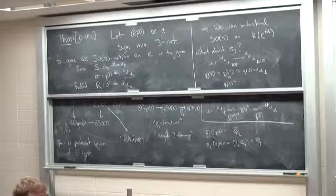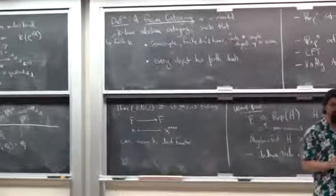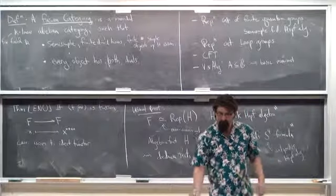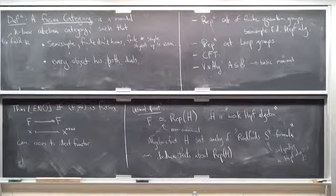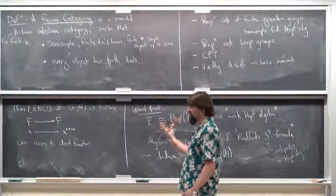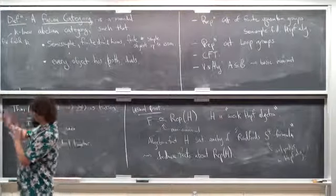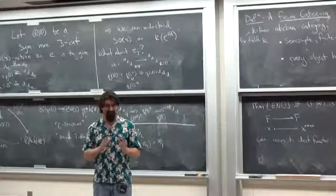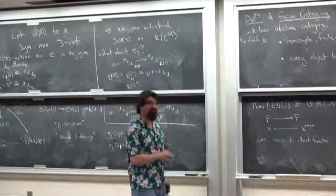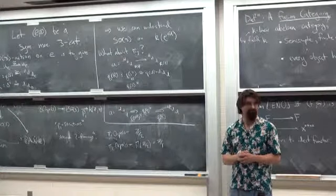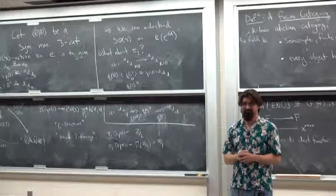Another question: SO2 and SO3 have very interesting finite subgroups — is there anything to be learned from looking at Z mod 3 or Z mod 5 sitting inside SO2? I think that is a really interesting question, trying to connect it to this kind of categorical data. I have not thought about it so I have nothing to say, but I think it would be a very interesting thing to explore. Any other questions? Well, let's thank Chris again for this wonderful series of lectures.